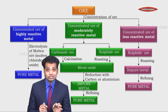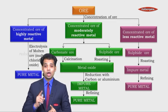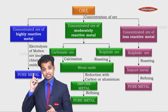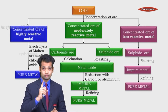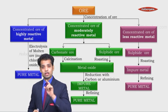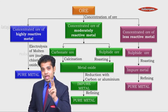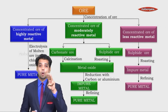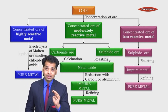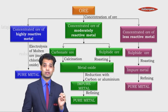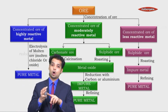All of this — all the concepts are very simple. The chart is what you follow. To recap: potassium, sodium, calcium, magnesium, and aluminium are highly reactive. Zinc, iron, and lead are moderately reactive. Remember one more metal — manganese. And the least reactive metals are copper, silver, and gold.